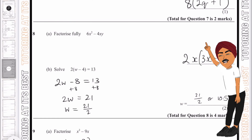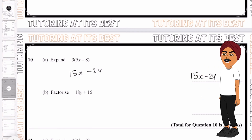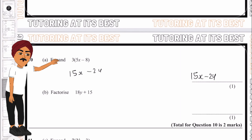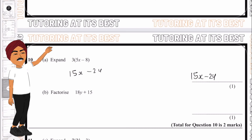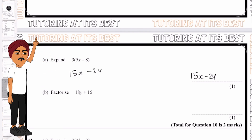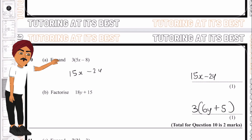Let's finish with question 10, which is an expand and factorize. For part a: 3 times 5x is 15x and 3 times minus 8 is minus 24, leaving 15x − 24. For part b, factorize 18y + 15: we find 3 is common to both 18 and 15. So 3 times 6y gives 18y and 3 times 5 gives 15, leaving 3(6y + 5).